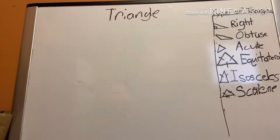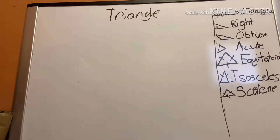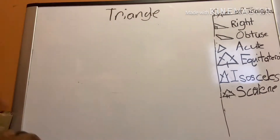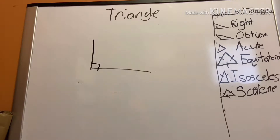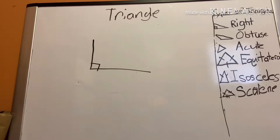Your first type of triangle is a right angle triangle. The reason it's called a right angle triangle is because it has a right angle — it's angled into a square. With any square, you're able to make a box. If you look at that part where it goes like this right here, if you're able to make a square, you can tell it's a right angle triangle. All right angle triangles will have that box.